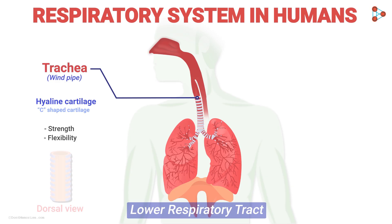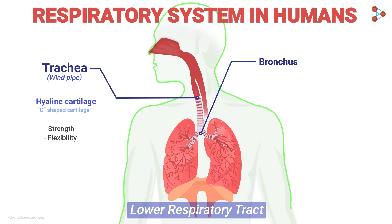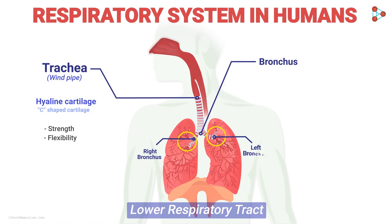At the point where the trachea is about to terminate, the next junction arrives. This is called the bronchus. Bronchus acts like the entry point into the lungs, and it gets divided into two branches called the right main bronchus and the left main bronchus. Here we are referring to the structures with respect to the human body — if this individual is standing in front of you, this is the right and this is the person's left side. Similarly, this is the right and this is the left main bronchus.